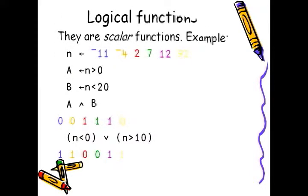For example, assuming that N has that value, we can assign to A if N is greater than 0, and we can assign to B if N is smaller than 20. Then when we say A and B, that tells us effectively where all the numbers that are greater than 0 and smaller than 20. In this case, all the ones that are associated with 2, 7, and 12, which is exactly the ones that are greater than 0 and smaller than 20.